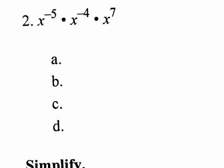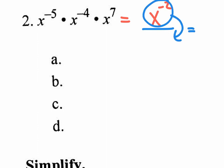Number two on this practice midterm, we're going to use different rules of exponents. Rule one says if you're multiplying terms with the same base, you add up all the exponents. So negative five plus negative four plus seven gives us X to the negative two. You won't see that on multiple choice answers, because if you have a negative exponent, you move it to the other side. Make it look like a fraction — there's nothing left on top, so put a one there. Your final answer is one over X squared.